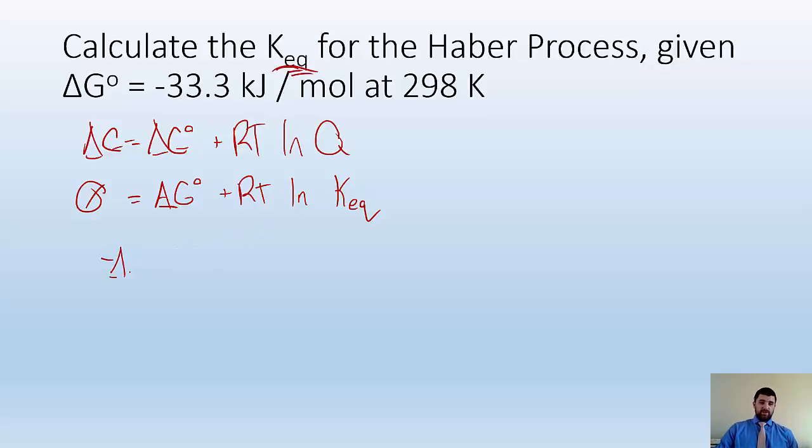So now I got to get rid of some things. I put negative delta G over to the other side. I divide by RT, and I'm left with just the LN of KEQ. So I put E to the negative delta G over RT equals my KEQ.